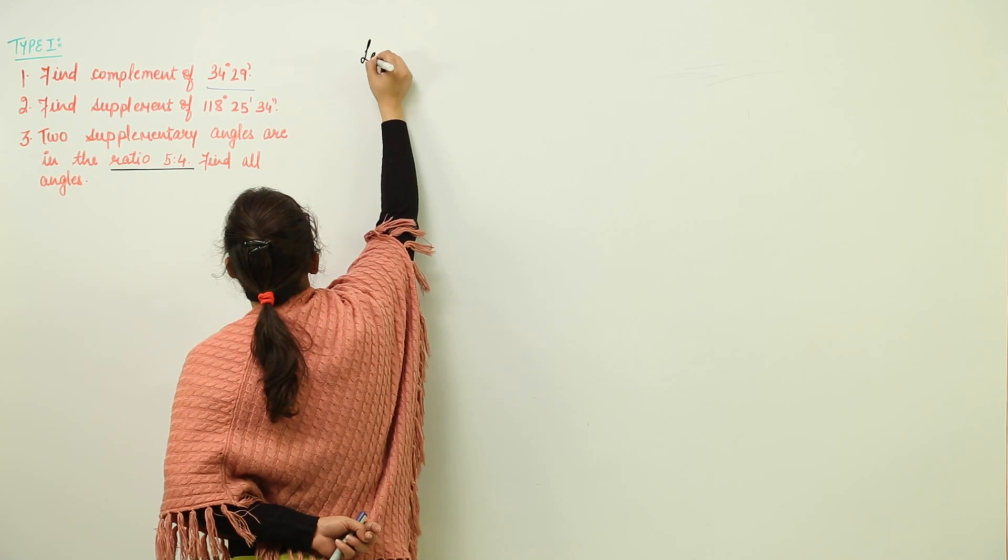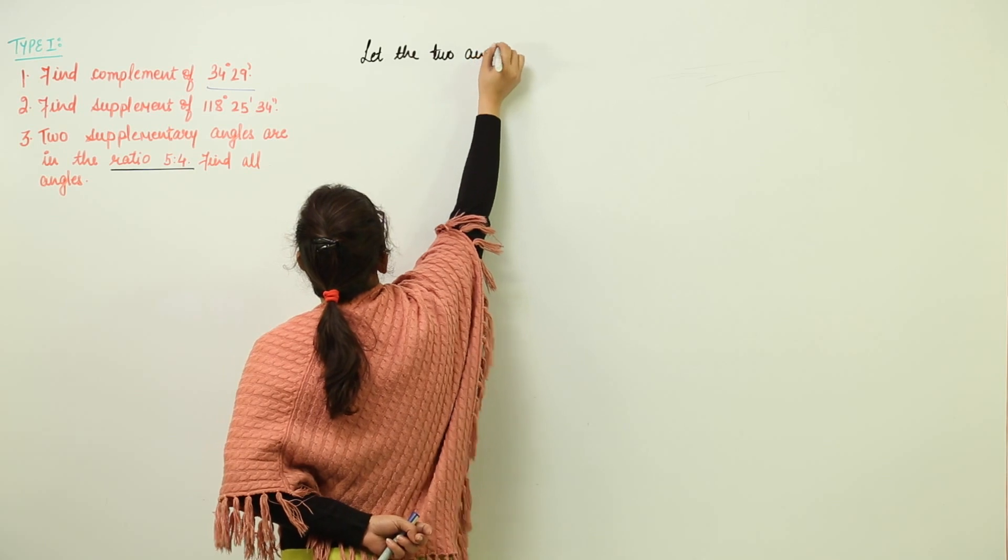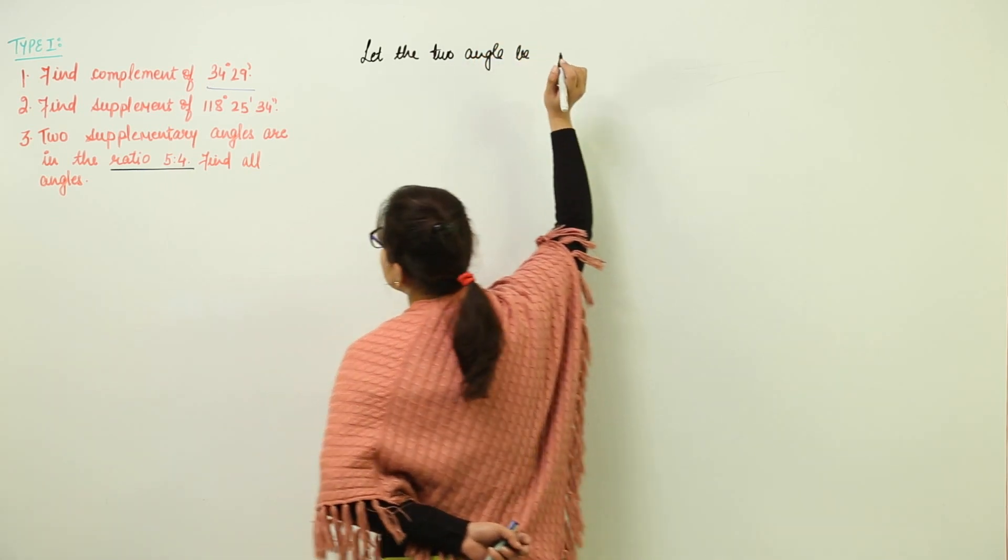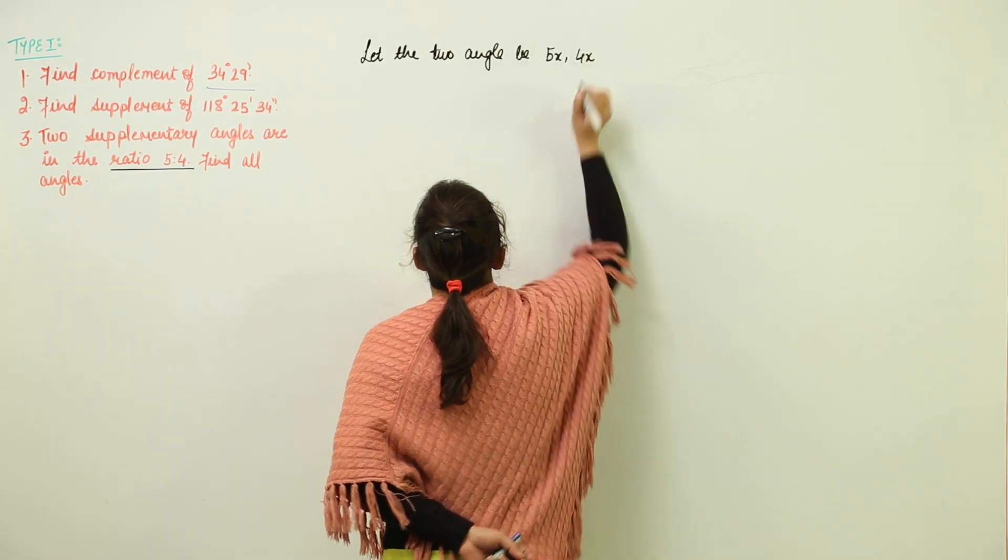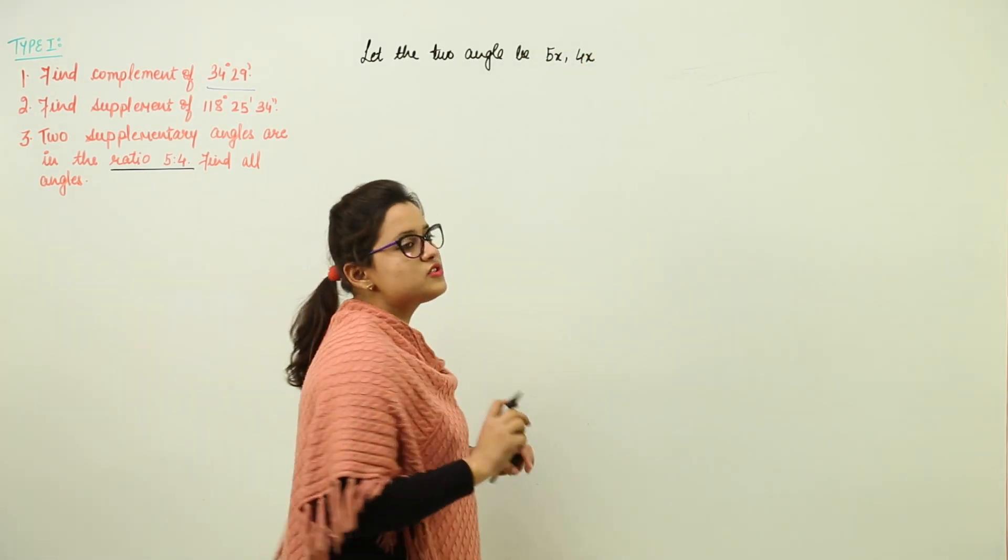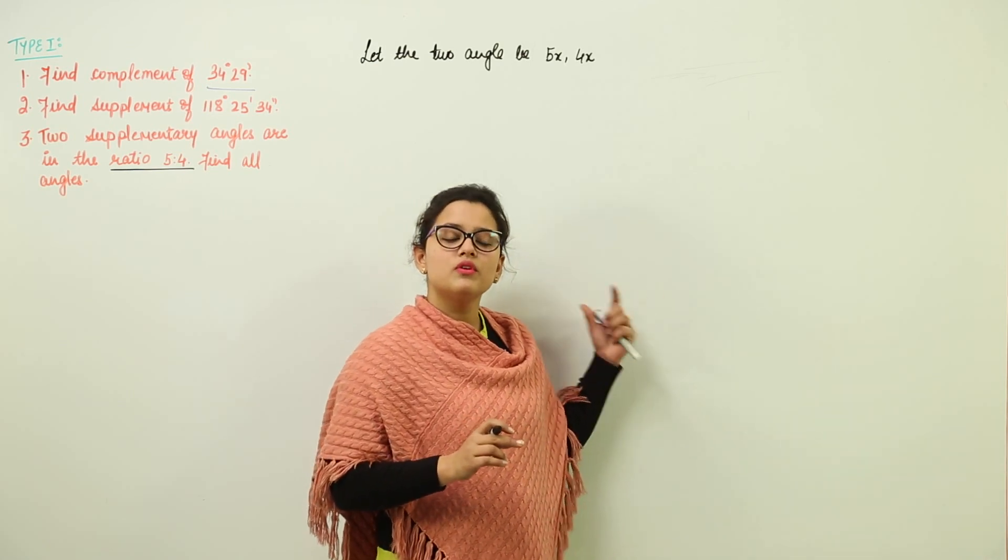Let the two angles be 5x and 4x, because 4:5 is to 4 is just representing the ratio in which they are. The actual value may differ from it, so we have taken them as 5x and 4x.